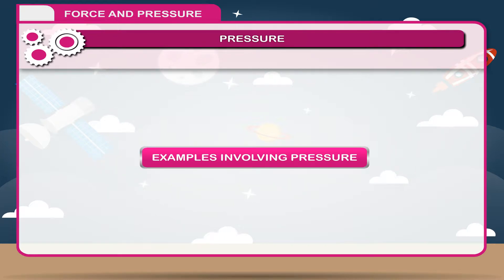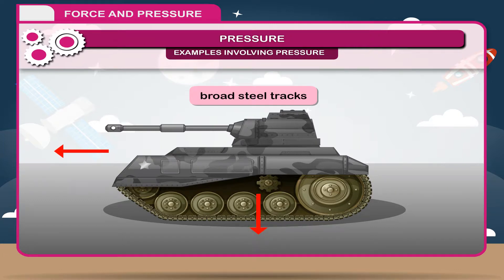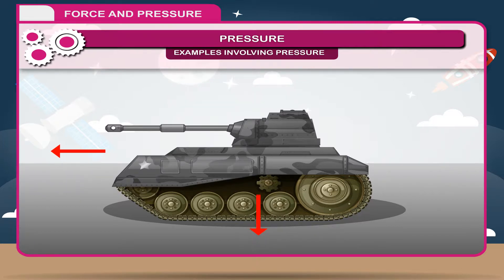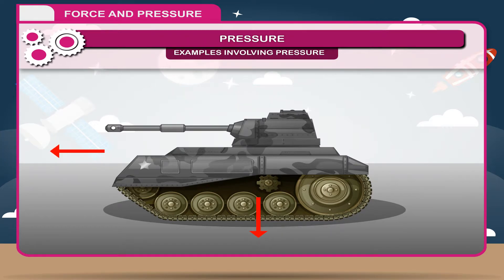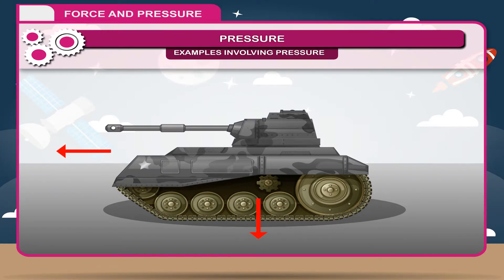Examples involving pressure: 1. Army tanks are usually very heavy and therefore exert a lot of force on the ground. Hence, they are made to move over broad steel tracks rather than wheels, as broad steel tracks increase the area of cross section in contact with the ground, reducing pressure. Thus, the movement of tanks becomes easier without their sinking into the ground. For the same reason, caterpillar tracks are provided with 16 or more wheels to increase area in contact.